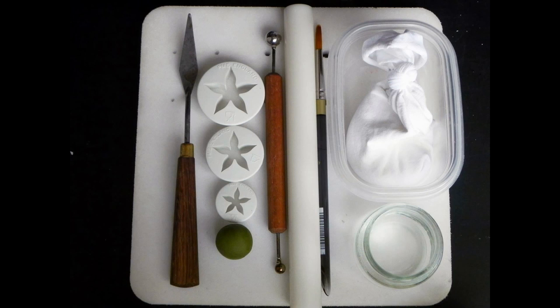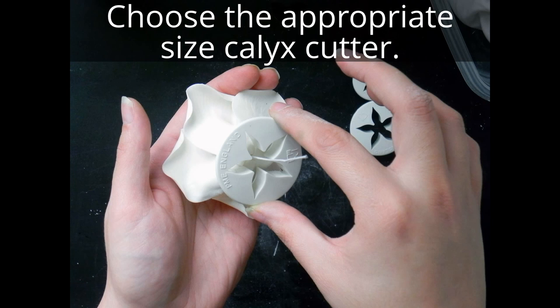First you need your cell pad, a good cutting surface which is my self-healing mat from Fiskars. I have a link to that in my blog post. I have three different sizes of calyx cutters, five point calyx, some calyx green gum paste, my small medium ball tool, an acrylic rolling pin, my paintbrush, a little bit of cornstarch in a poof, and my sugar glue.